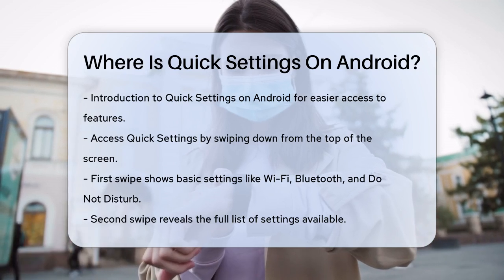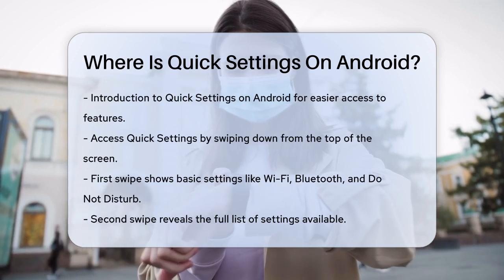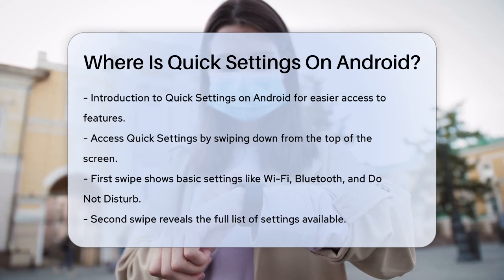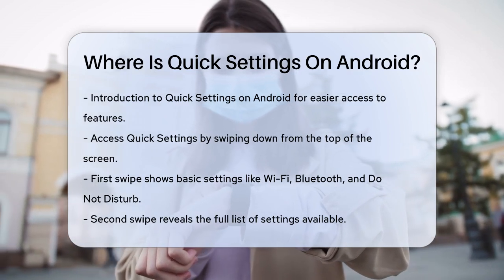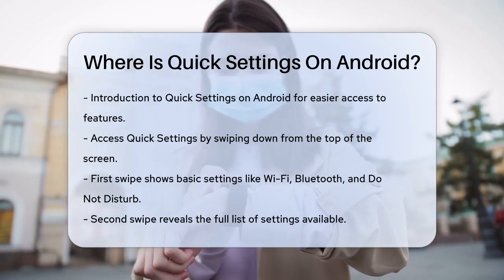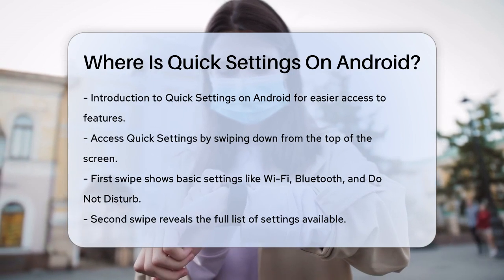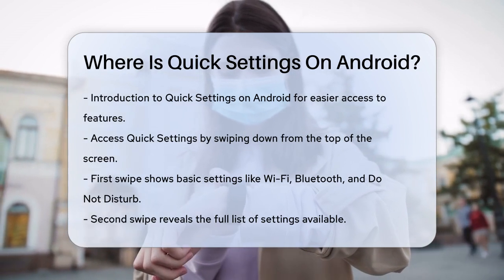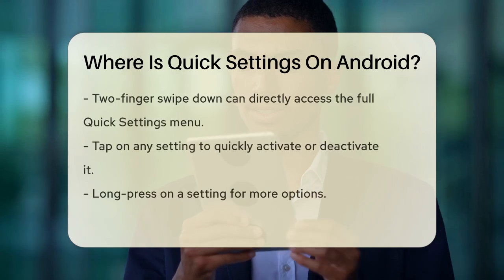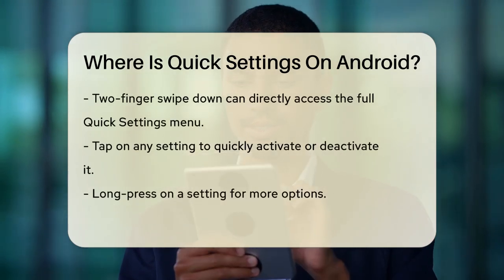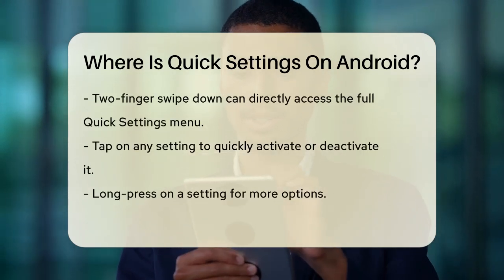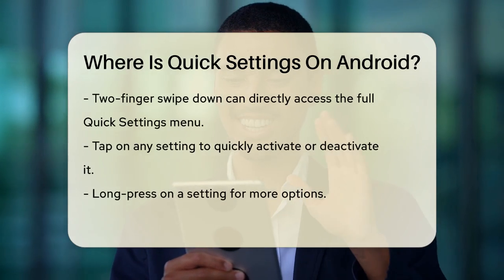To access the Quick Settings panel, you simply need to swipe down from the top of your screen. On most Android phones, like Google Pixels, swiping down once will show you the first few Quick Settings, such as Wi-Fi, Bluetooth, and Do Not Disturb. If you swipe down again, you'll see the full list of available settings.